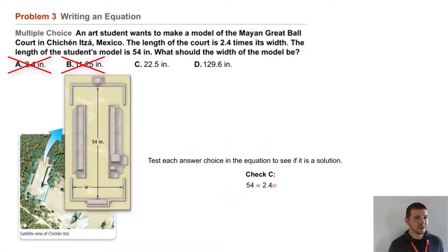Choice C, 22.5, when we substitute that one in for W and multiply by 2.4, we do get 54. 54 equals 54. So it seems like it's choice C.